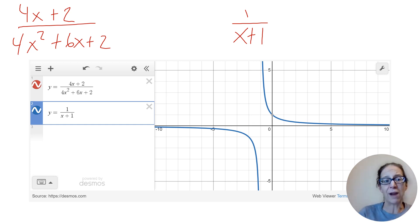So I'm going to graph and it does help to graph it as a function. So I know if you just type in the expression, Desmos will graph it, but it will give you the ability to see points of intersection if you graph it as a function. So we have four X plus two, and then on the denominator, we have four X squared plus six X plus two. So that's the graph we got.